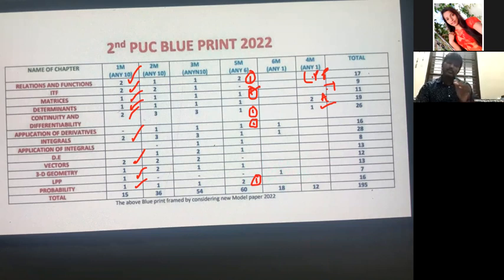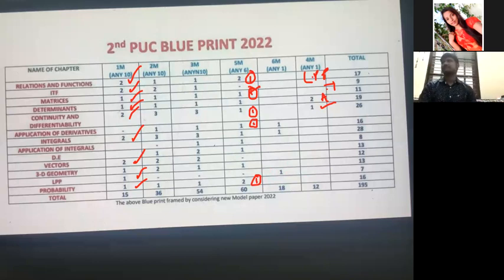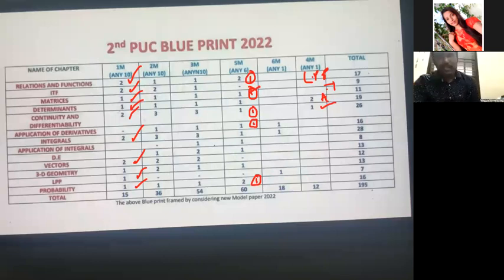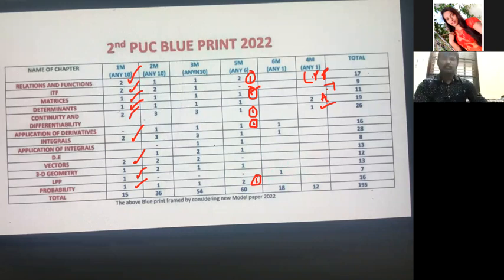My suggestion: attempt all 15 questions. If you don't know a question, leave it — write the question number and skip it. Continue with the next one. There are 66 questions total in the question paper. Write all 66 question numbers and don't forget that. For example, if question number one you can't answer, leave it and continue with number two, three, four, and so on.